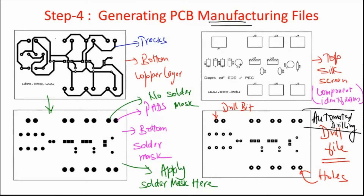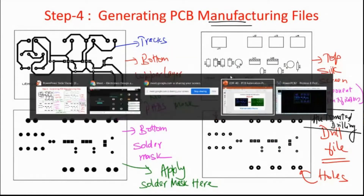To summarize the four files: the copper layer file contains all tracks providing electrical connections; the top silk screen layer identifies legends and components; the bottom solder mask applies the green mask to the bottom layer; and the drill file is used for drilling holes in the appropriate pad locations.